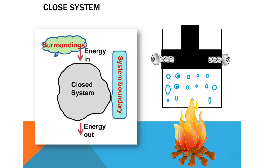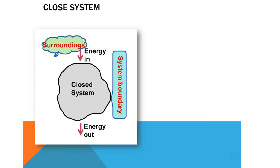We can also consider the example of a vessel with a piston fixed by a locking device or screw, so there is no piston movement. The vessel is filled with air at the bottom. When we supply heat from an external source, the heat is transferred to the vessel, molecular motion increases inside the air particles, and the internal energy of the system changes. Since the piston is fixed there is no transfer of mass to the surroundings, but heat transfer occurs — this is called a closed system.